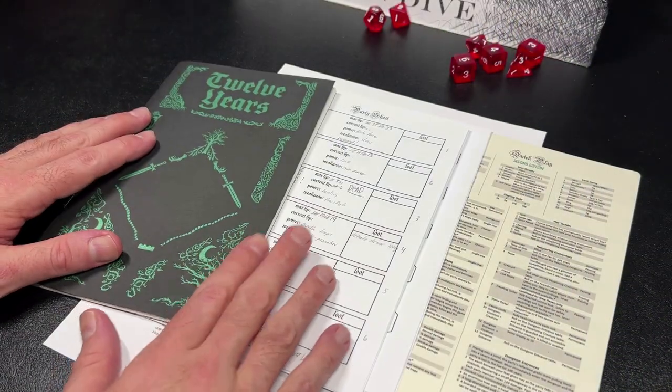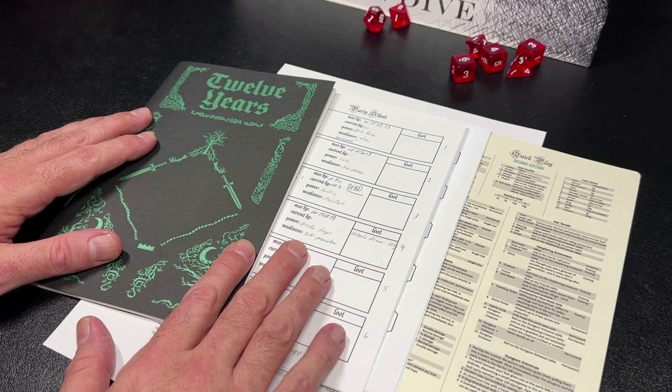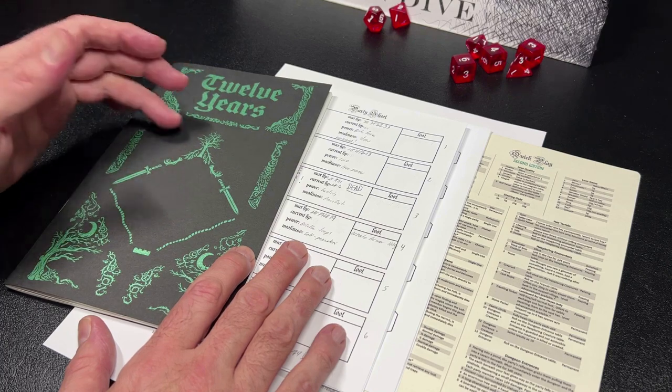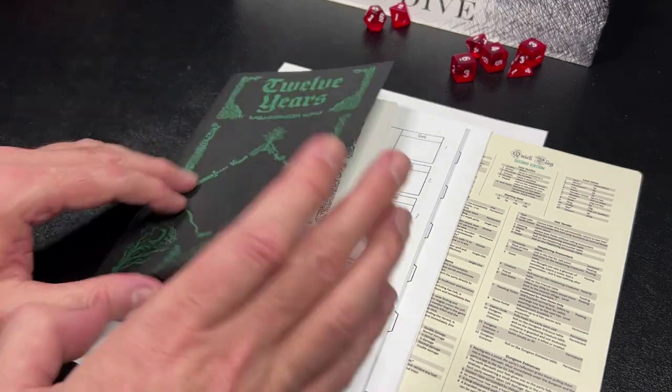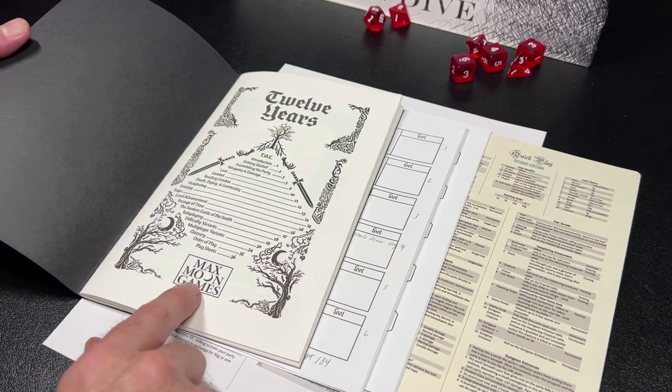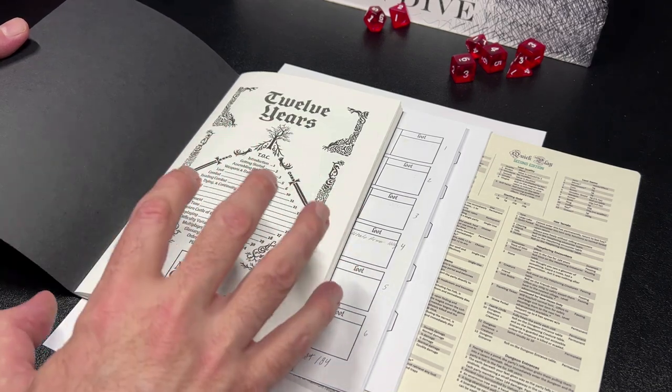Hey everybody, welcome back to the Dungeon Dive. Daniel here. I hope you're doing well, and if you're not, I hope you are soon. Today on the Dungeon Dive, we will be taking a quick look at 12 Years, a solo RPG zine created by Max Moon and released under Max Moon Games.